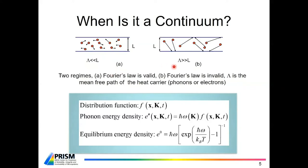If the opposite is true — if the mean free path of phonons is much larger or comparable to the length scale of the medium L — then particles interact with the boundaries far more often than they interact with each other, and the finiteness of the medium becomes important. In that limit, Fourier's law is basically invalid and you have to deal with the subcontinuum nature of the problem. So we are interested in regimes where the mean free path of phonons is either larger than or comparable to the length scale of the medium.